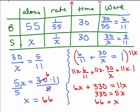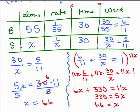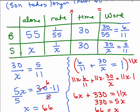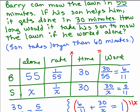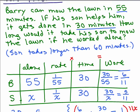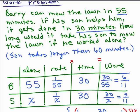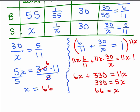So let's look back up here. What did x stand for? That was how long it would take the son working alone. And remember we estimated that it would take longer than 60 minutes because it only took his dad 55 minutes but together they took 30 minutes so he must have been working slower. So, 66 seems pretty reasonable, but we will check it.